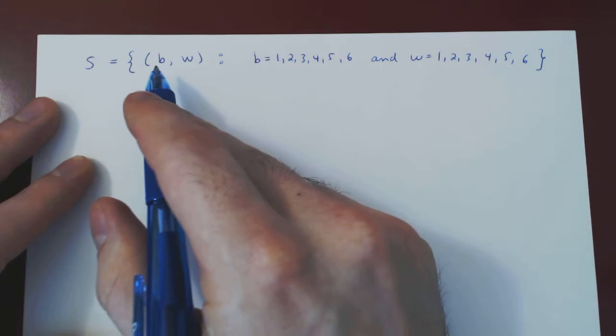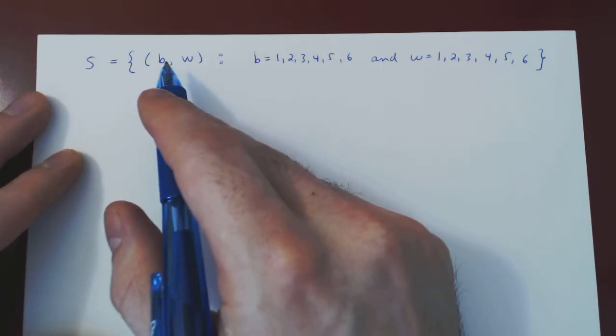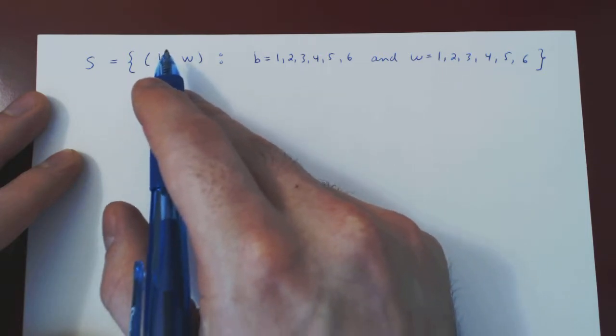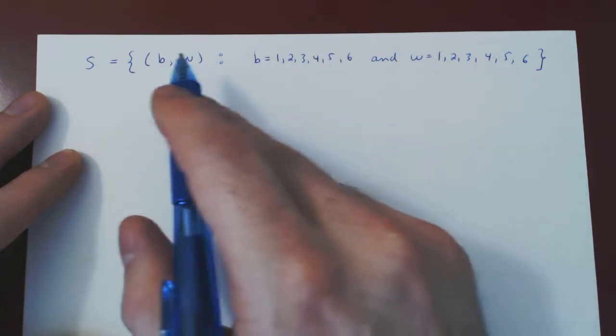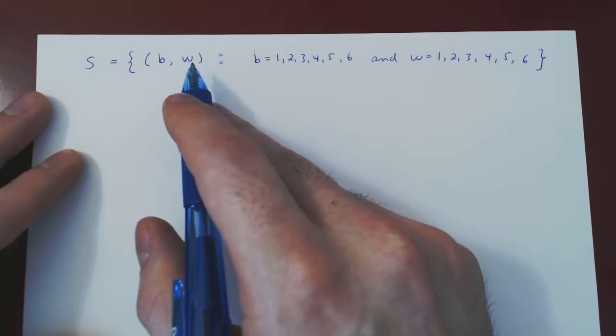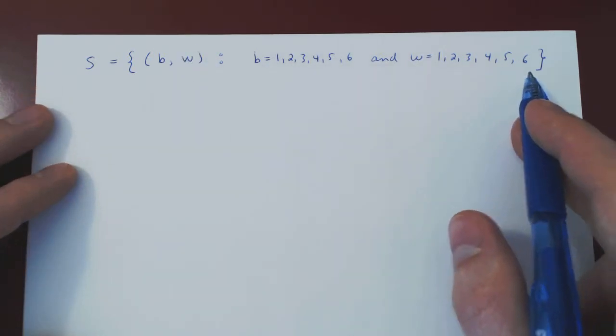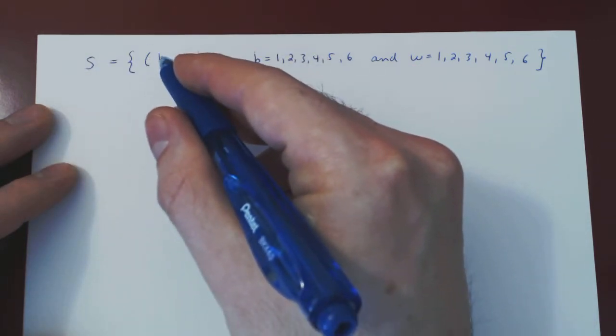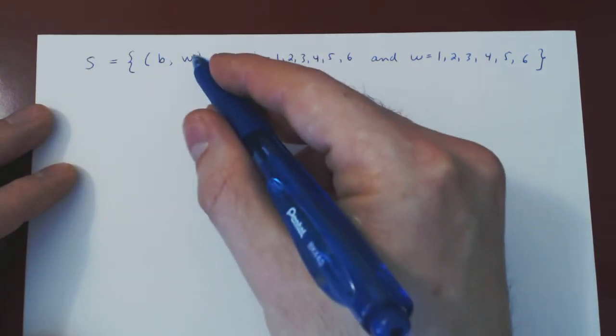So what we have now is a Cartesian product. Our sample space consists of all pairs where there are six options for the first and six options for the second. I'm not going to list all possible pairs, but that gives you six options for the first choice and six for the second.